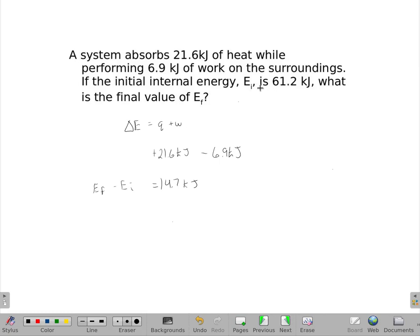And I gave you the final and I want you to solve, or I gave you the initial and I want you to solve for the final. So, EF minus 61.2 equals 14.7.